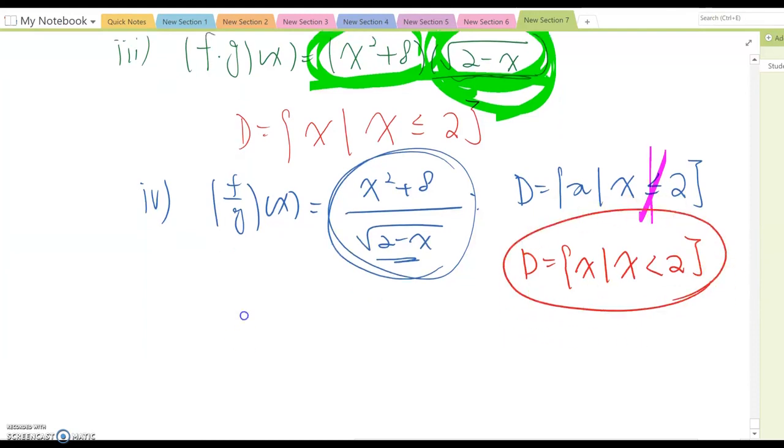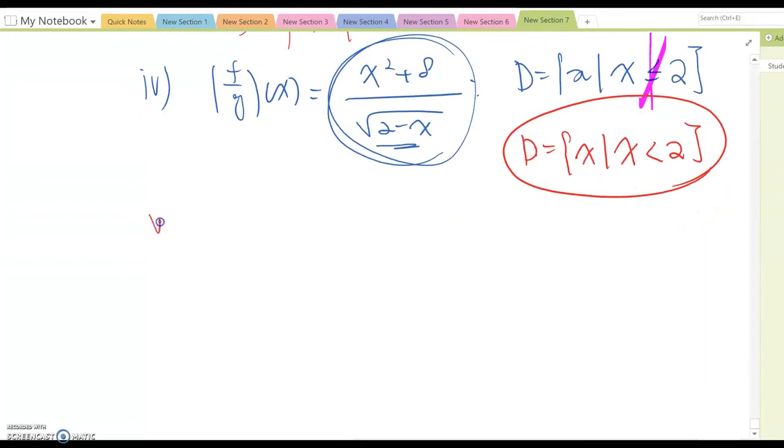Okay? What about number five, so g over f of x, which means square root 2 minus x over x squared plus 8.